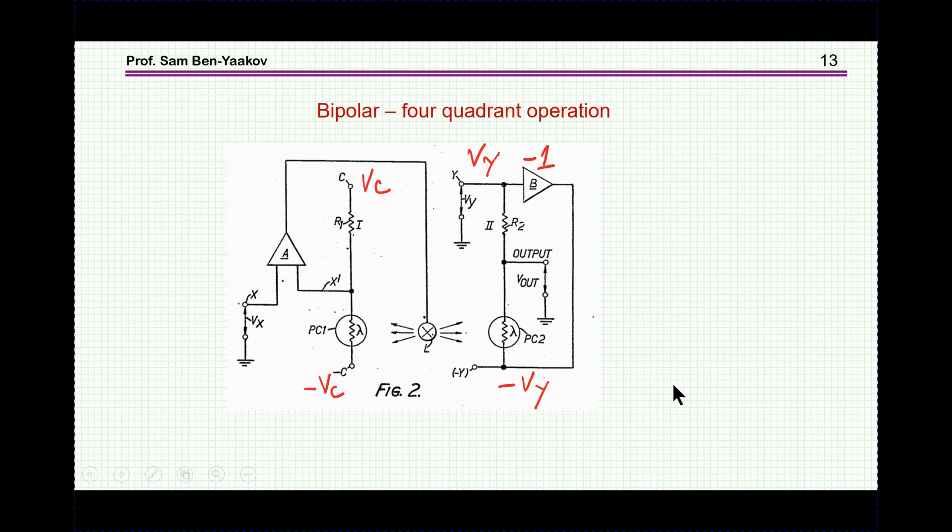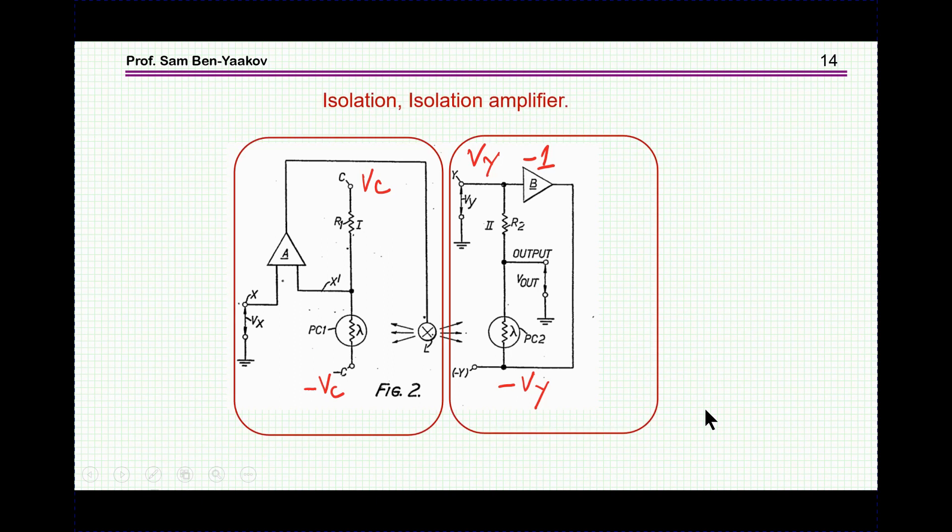So this was done quite a bit ago and it was used in a number of instruments we have built. And the nice thing about it is also that the input and output are really isolated. So in fact it's an isolated amplifier. You can make it an amplifier, an isolated amplifier, because if you have only Vx, and Vc and Vy are constants, then you have an output which is proportional to the input in an isolated way.